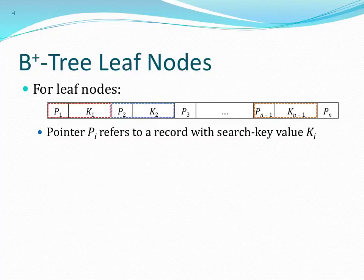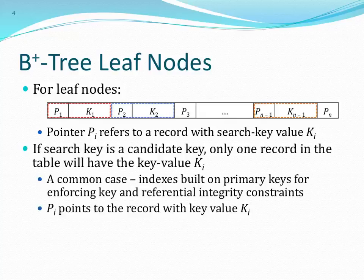For leaf nodes, Pi is a pointer to a record with key value Ki. So P1 points to the record with search key K1, P2 to K2, and so forth. We group the pointer and key together so that every entry (P1K1, P2K2, P3K3) is distinct from the others. This technique makes every record in our index distinct — each tuple is only referenced once by the index.